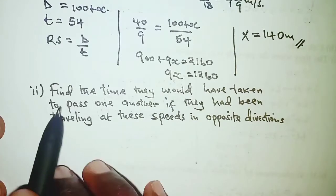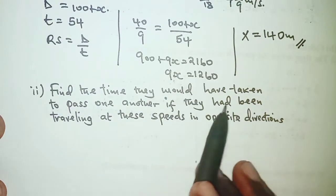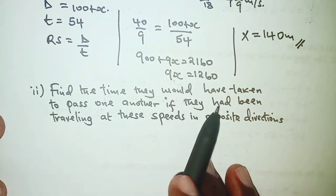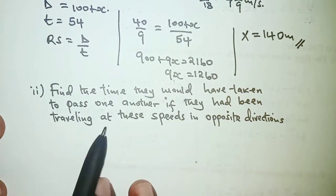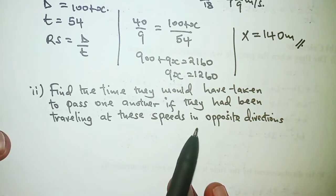For the second part, we need to find the time they would have taken to pass one another if they had been traveling at these speeds in opposite directions.